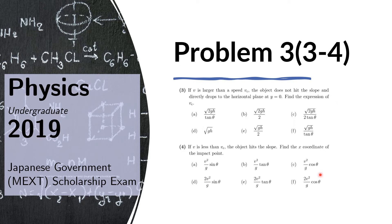Questions three and four are related, so let us answer them together. If v is larger than a speed v sub c, the object does not hit the slope and directly drops on the horizontal plane at y equals zero. Find the expression of v sub c. If v is less than v sub c, the object hits the slope; find the x-coordinate of the impact point.